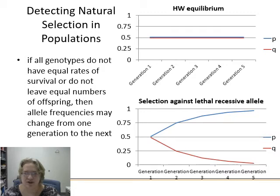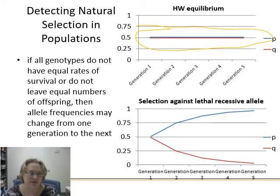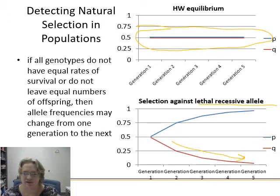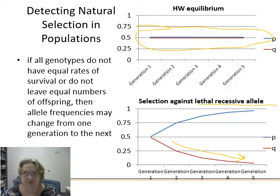At the top, Hardy-Weinberg equilibrium — nothing is acting on these alleles, so they'll just stay the same. If an allele is a lethal recessive, it'll get pushed out over time — it may not ever disappear entirely, but it'll definitely get very low. Whether it's eliminated depends on the pressure: if there's selection against the heterozygote, it'll be sure to go over time.